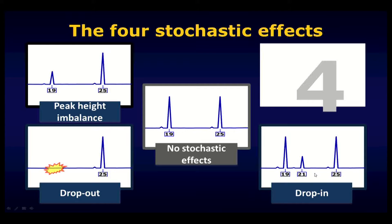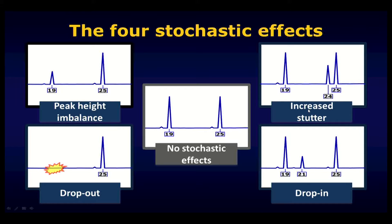The fourth commonly encountered stochastic effect is something related to a technical artifact called stutter. Stutter peaks are very commonly observed in forensic DNA test results. They're recognized typically by their position — being one set of tetranucleotide repeats before another peak — and their height. If you see a small peak immediately preceding a large peak, it's easy to attribute that to this stutter phenomenon. Together, these four stochastic effects constitute the majority of stochastic effects in forensic DNA profiling contexts, and they make it difficult for us to interpret just what the original DNA in the sample actually contained.